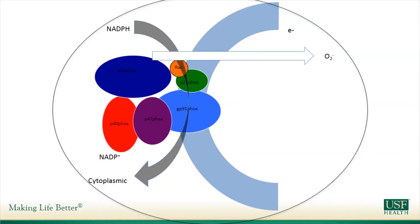This complex here is the NADPH complex, and that complex is made of six different proteins — five of which we're going to concentrate on today. Mutations in any of those proteins give you the same disease — CGD.